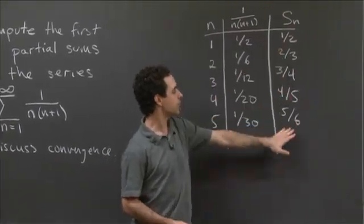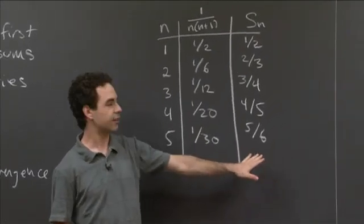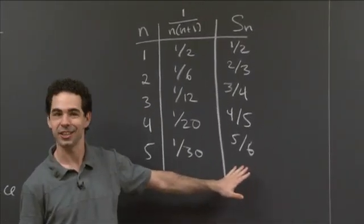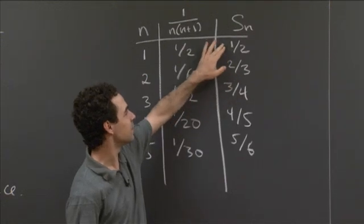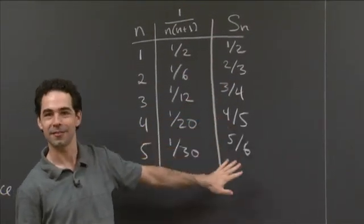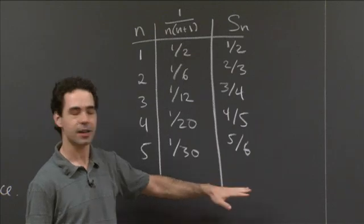And if you look at these terms here, you'll see that there's a little bit of a pattern here, right? So this is 1 half, 2 thirds, 3 quarters, 4 fifths, 5 sixths. That's a pretty nice sequence of numbers.